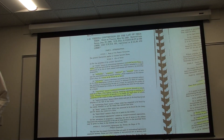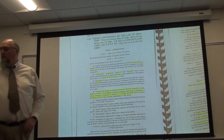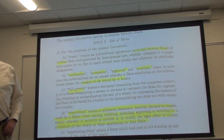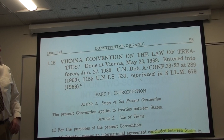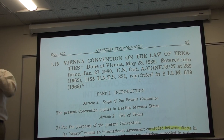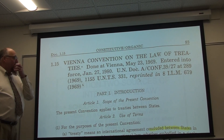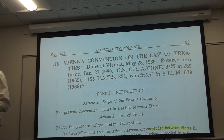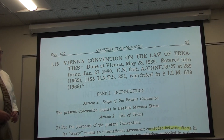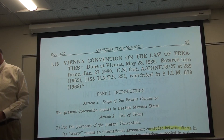Today we're talking about the Vienna Convention on the Law of Treaties, which was initiated in Vienna, Austria in 1969 and in the United States entered into force in 1980.